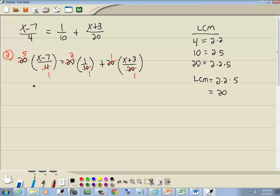So we're left, let me write it down, then I'll multiply it through. We're left with 5 times x minus 7 equals 2 times 1 plus 1 times x plus 3.